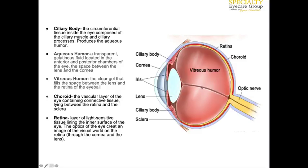The vitreous humor is the more posterior component of the eye — it's a clear gel that fills that space. The aqueous is a transparent fluid that fills the anterior and posterior chambers, particularly between the lens and the cornea. The choroid is the vascular layer of the eye that supplies blood vessels and blood supply for the outer sclera and the inner retina.